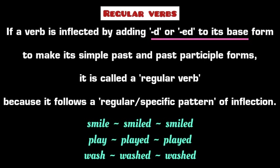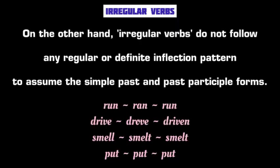For example, the verb 'smile' is inflected by adding -d to its base form, so 'smile' becomes 'smiled' in both past and past participle forms. The verbs 'play' and 'wash' are inflected by adding -ed to their base forms to make their simple past and past participle forms. So regular verbs have the same inflection in their simple past and past participle forms.